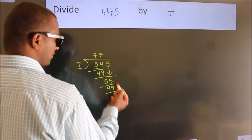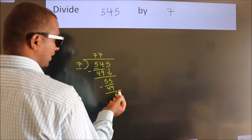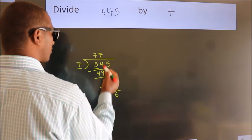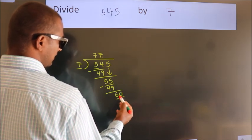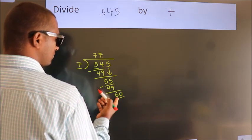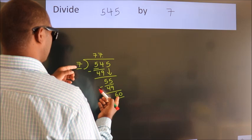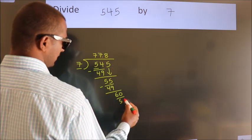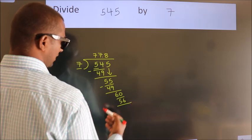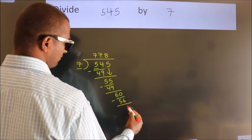After this, no more numbers to bring down. So what we do is put a dot and take 0, giving us 60. A number close to 60 in the 7 table is 7 times 8 equals 56. Now we subtract and get 4.